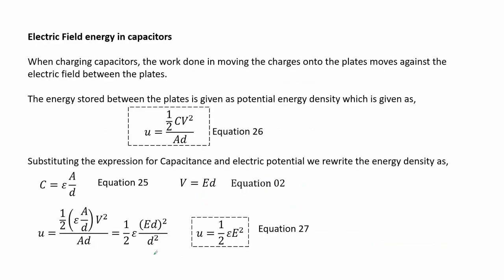Electric field energy in capacitors: when charging capacitors, the work done in moving charges onto the plates acts against the electric field between the plates. The energy stored between the plates is given as potential energy density by equation 26. Further substituting the expression for capacitance and electric potential, we rewrite the energy density as equation 27.